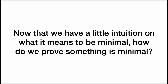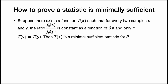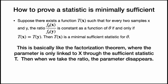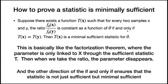So how do we prove something is a minimal sufficient statistic? We have this theorem: suppose there exists a function t(x) such that for every two samples x and y, the ratio of the joint PDFs is constant as a function of theta if and only if t(x) equals t(y) — then t(x) is a minimal sufficient statistic for the parameter theta. This is really a different version of the factorization theorem, where the parameter is only linked to our data x through the sufficient statistic t, and when we take the ratio the parameter disappears. The if-and-only-if ensures that this statistic is not just sufficient but minimally sufficient.